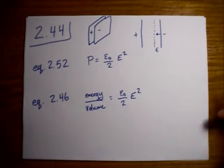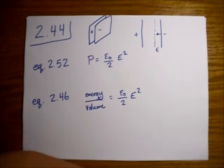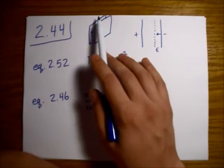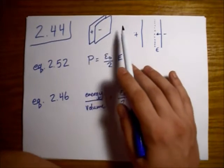So this is Griffith's electrodynamics problem 2.44, a very easy problem. What we're doing is comparing the work done by electrostatic forces to the energy lost by the electrostatic fields for the case of this parallel plate capacitor.